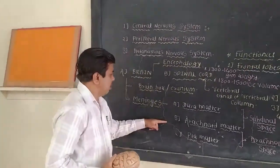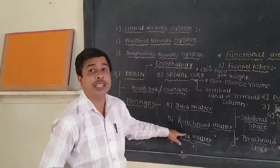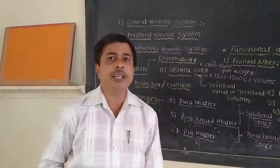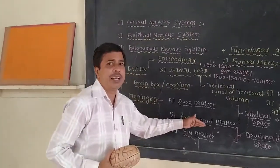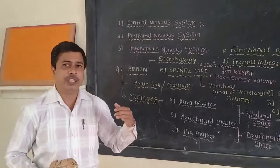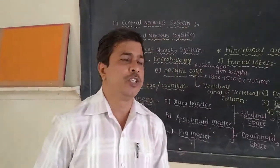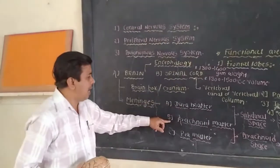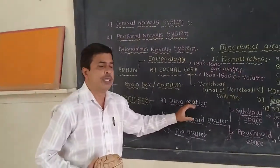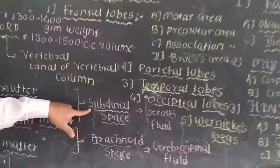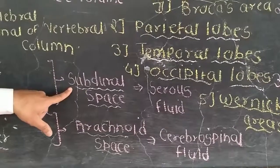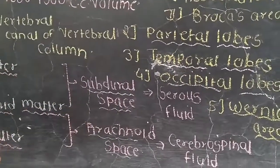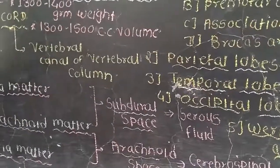The second protective membrane is known as the arachnoid mater. It is present below the dura mater, and it is a thin membrane that is highly vascularized, giving nutrition to the membranes. In between the dura mater and the arachnoid mater, there is a space known as the subdural space, which contains serous fluid. This serous fluid gives nutrition to those membranes.